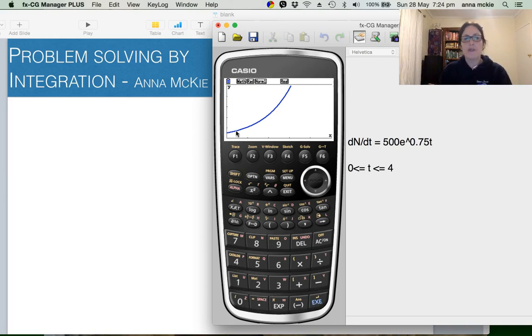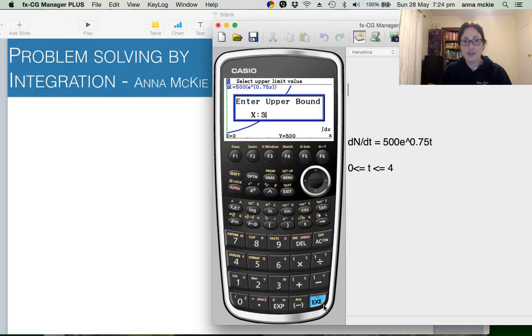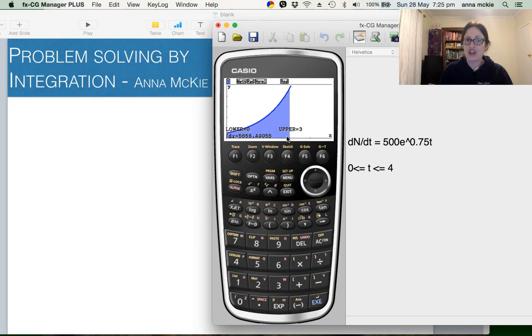So the first part said, how many cars enter the intersection in the first three hours? One, two, three here. So if we calculate the integral between zero and three, there we are. So the area under there of the rate function is actually the number of cars that we're interested in.